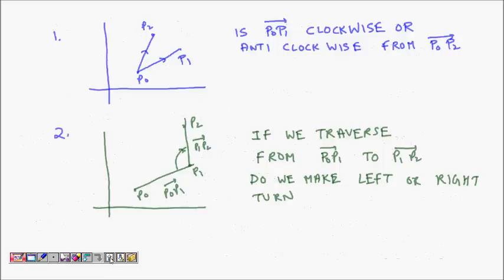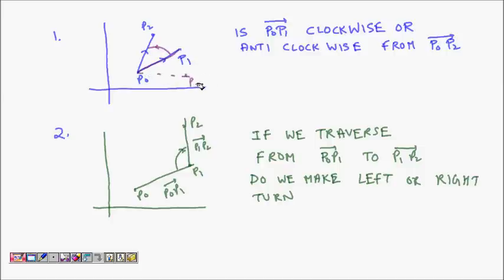We are going to study three problems. Given some points, p0 and p1 form one segment, and p0 and p2 form another. You have to find whether p0p2 moves counterclockwise or clockwise with respect to p0p1 — that is, whether reaching from p0p1 to p0p2 is nearer going counterclockwise or clockwise. That is the first question.